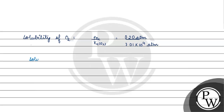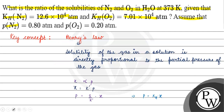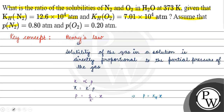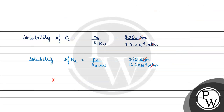Now if we write the solubility of nitrogen gas, that will be partial pressure of nitrogen divided by Henry's Law constant for nitrogen. The partial pressure of nitrogen is 0.80 atm, and KH for N₂ is 12.6 × 10⁴ atm. So solubility of N₂ equals 0.80 divided by 12.6 × 10⁴, over 0.20 divided by 7.01 × 10⁴.